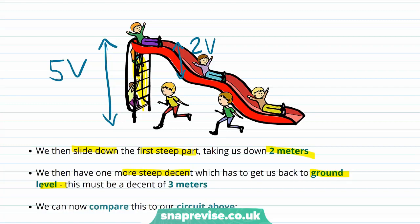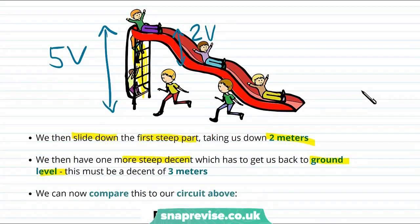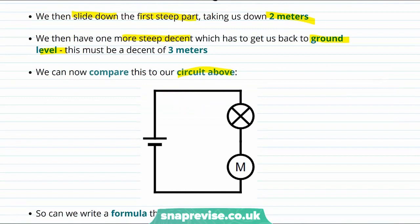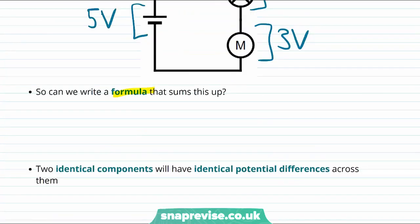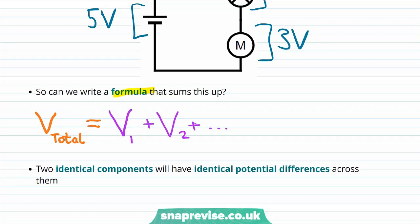We started at 5 meters, went down 2 meters, so we must go down another 3 meters to reach zero. Comparing this to the circuit: the battery brought us up to 5 volts, the first component drops us by 2 volts, so the motor must have a drop of 3 volts. The formula is that V total — the total potential difference — equals the sum of each individual potential drop. A final fact: two identical components in a series circuit will have identical potential differences across them.